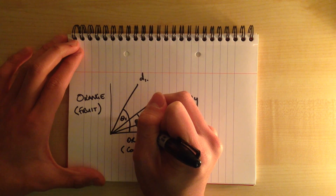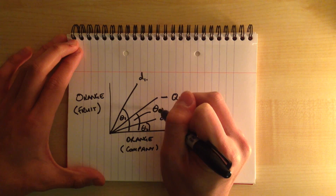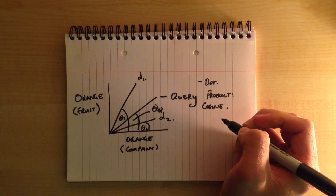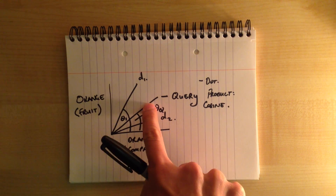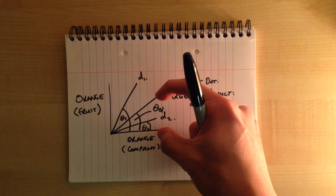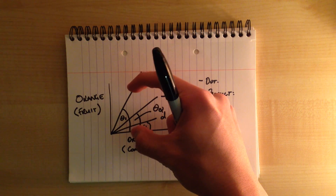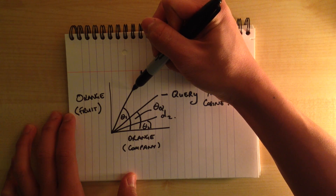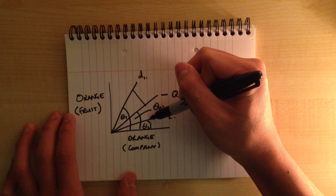Common types of IR systems are modelled in a vector space model. This uses a dot product rule to find the difference in the cosine between a result and a query. This difference determines the rank and the value of each result and determines which result gets shown to the query.